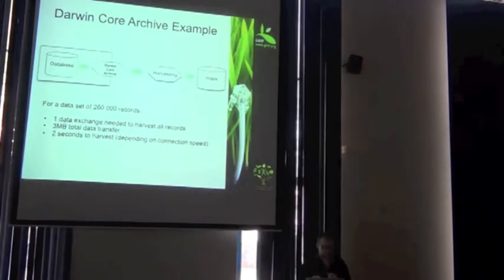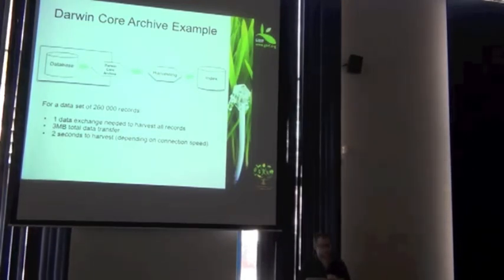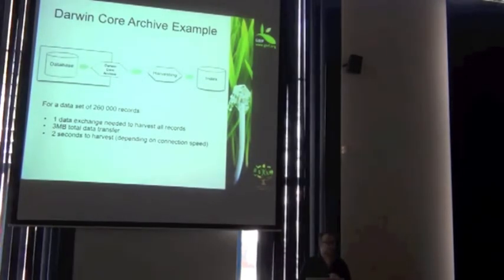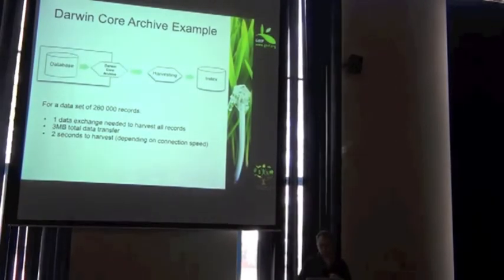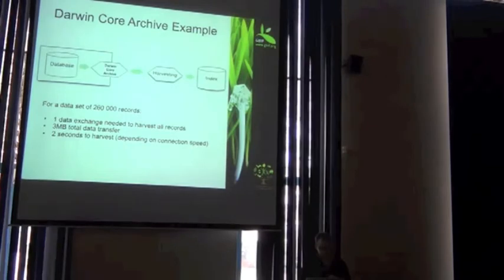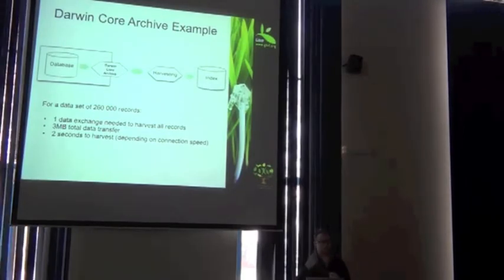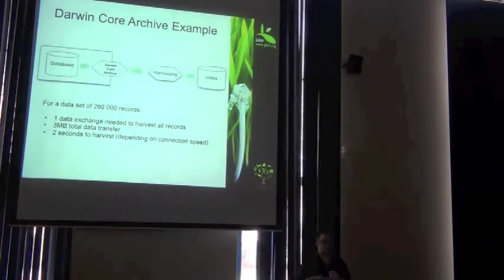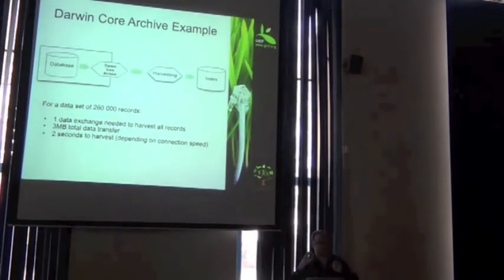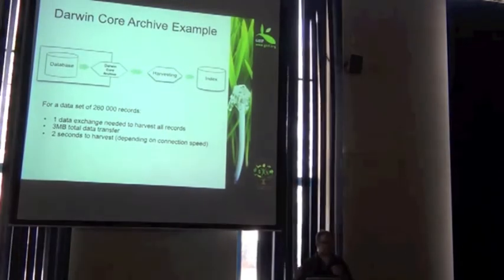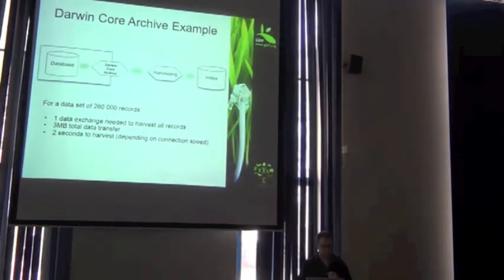So coming back to the Darwin Core Archive, imagine you have a Darwin Core Archive with 260,000 records. It's the same data set but now instead of publishing it through the Tapir tool, you've decided to publish it through another tool using a Darwin Core Archive. How many times does it take me to come to your server and say, give me your whole batch? It takes one time, because everything is inside one archive and it's just as simple as downloading any file on the internet. Just come make a request, one request.